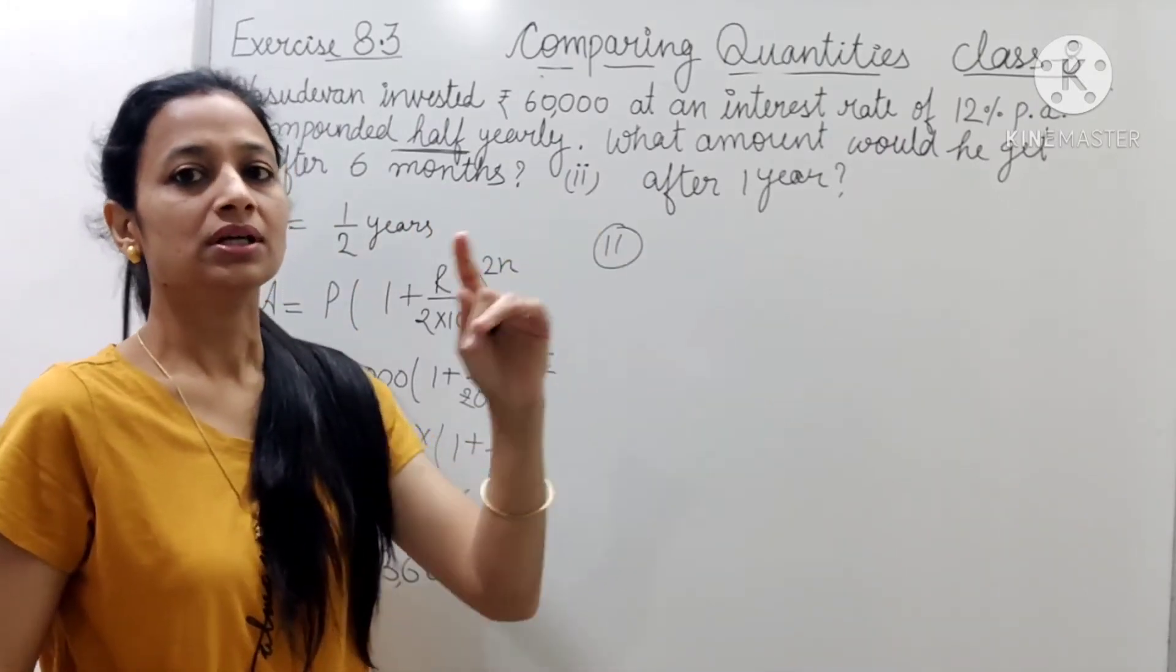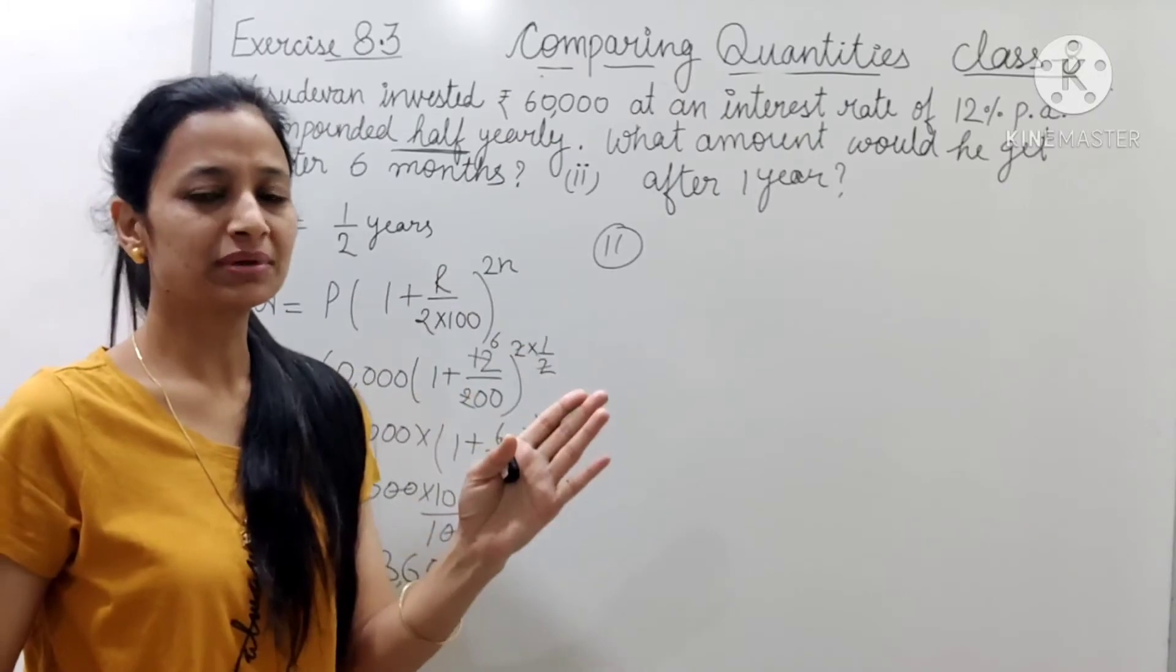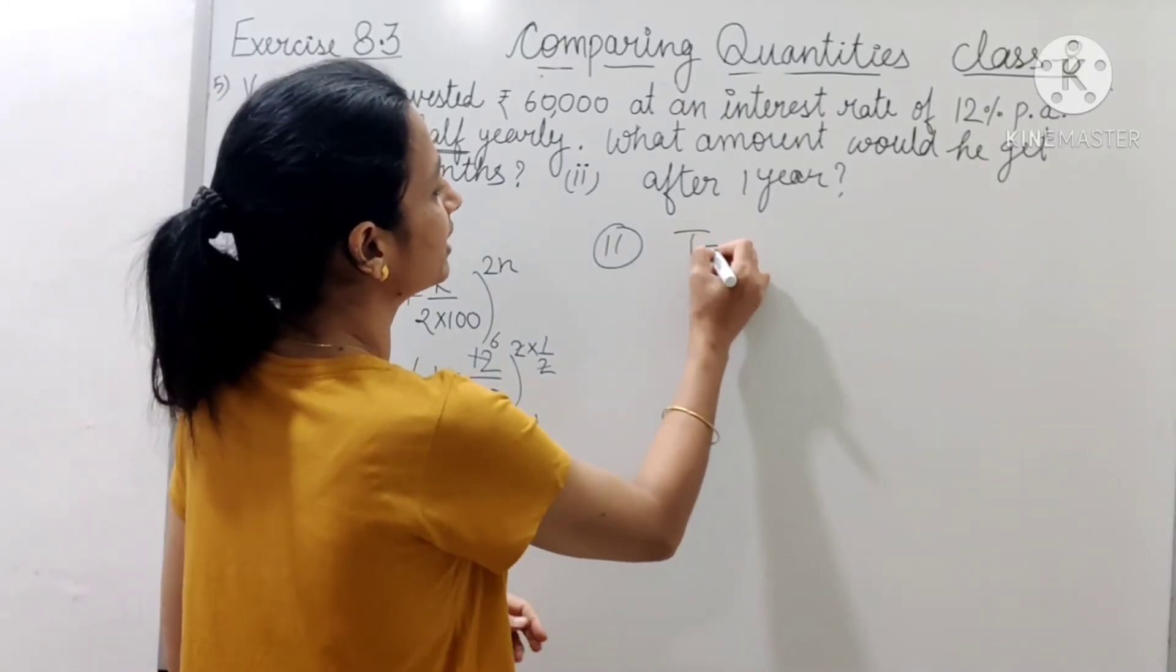Tho abhi remaining kitna ho gaya? Again, six month hi remaining hai, kyaunki one year me kitna hota hai? Six plus six month, matlab 12 month hota hai.